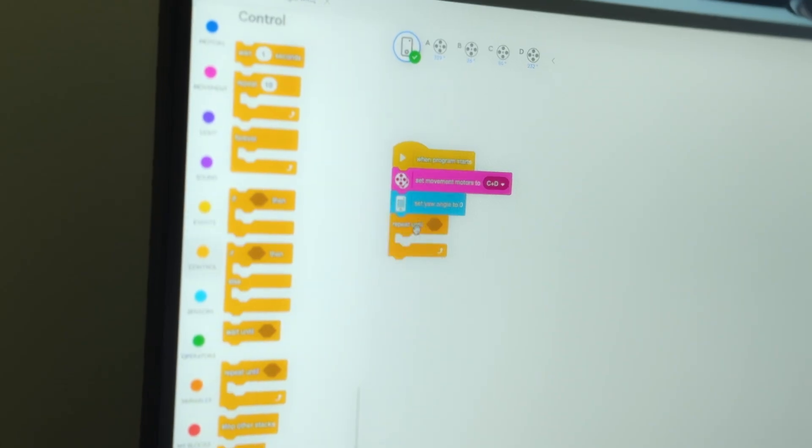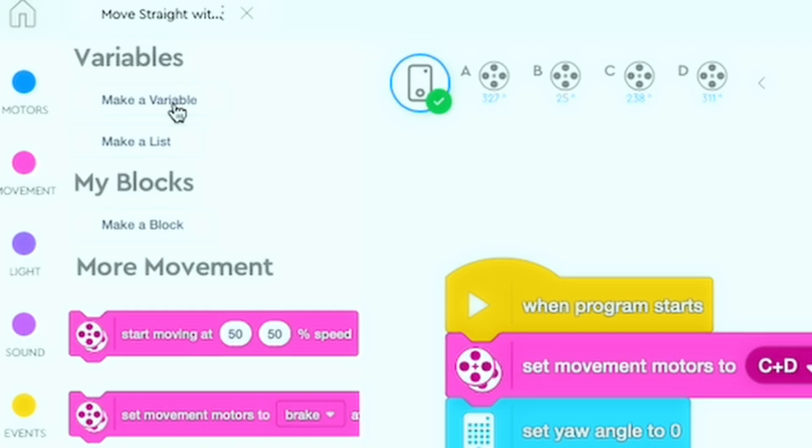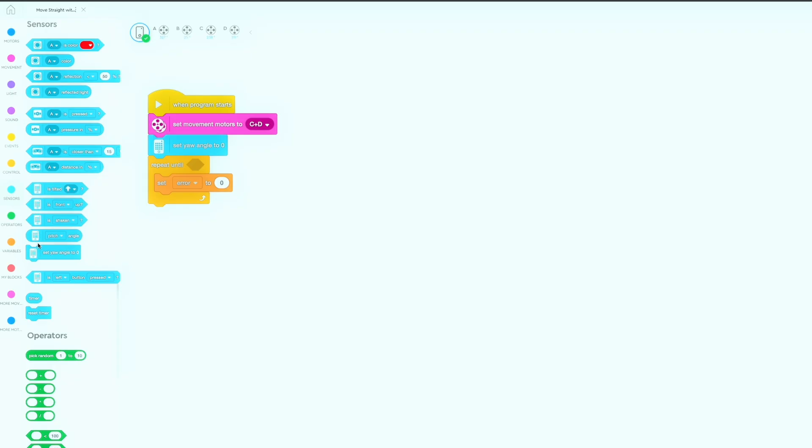Step number four, compute for error. Here we will make a new variable and we will name it error. This variable will be our yaw angle reading, and if our yaw angle reading is anything but zero, we will know that our robot is deviating and needs to adjust.